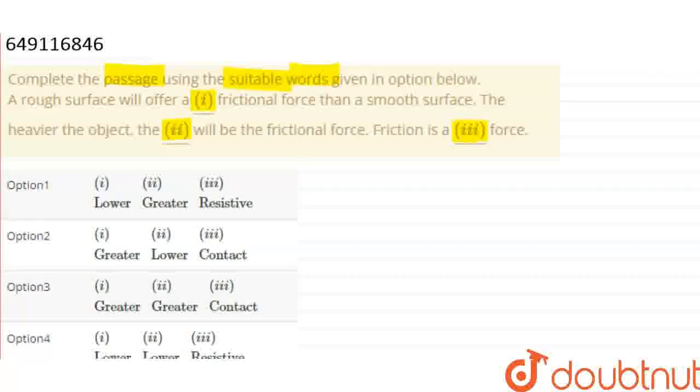Friction. So, the first question is: Rough surface will offer greater, lower, greater, lower. In this case, choose the case of rough surface compared to smooth surface.